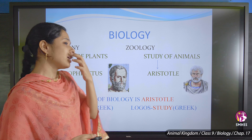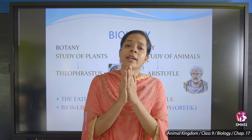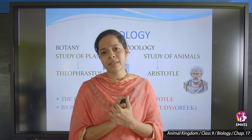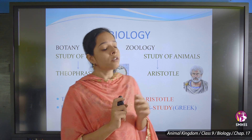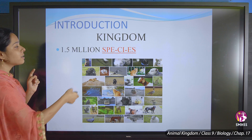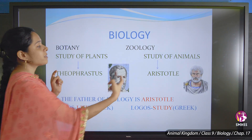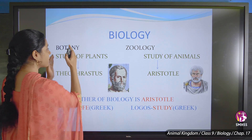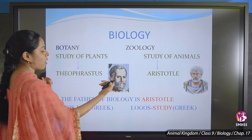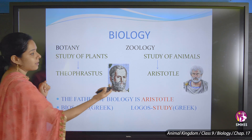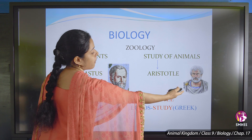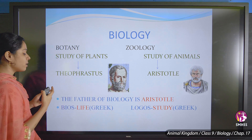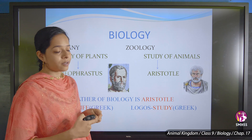What is botany and zoology? Botany is the study of plants and zoology is the study of animals. The term botany was coined by Theophrastus and the term zoology was coined by Aristotle, who is also called the father of biology.